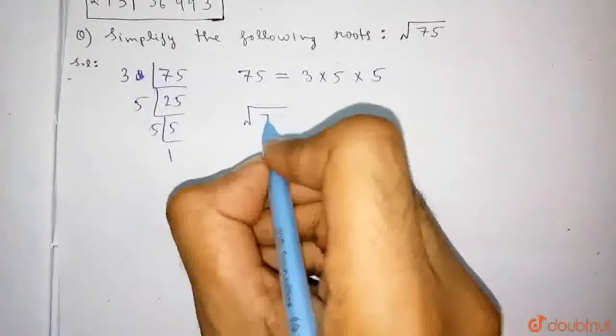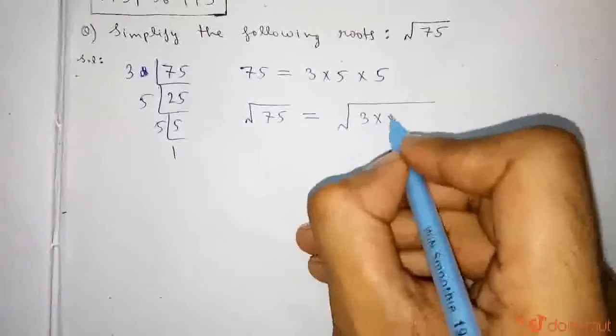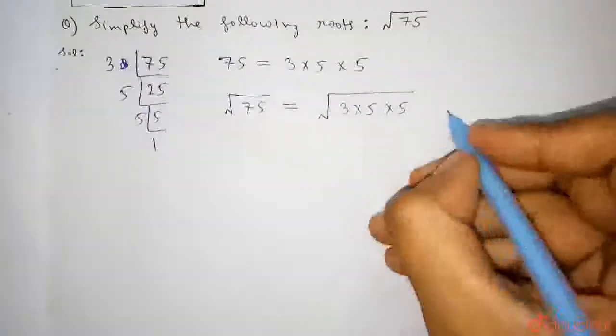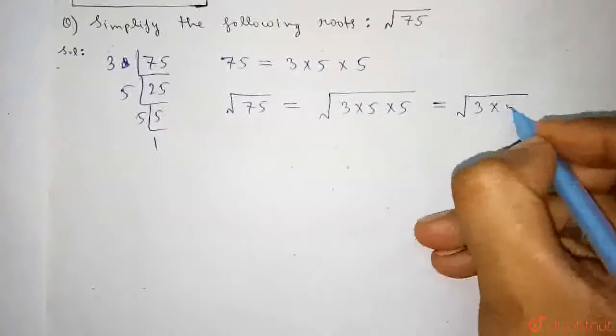So, we can write root over 75 is equals to root over 3 into 5 into 5, which is equals to root over 3 into 5 square.